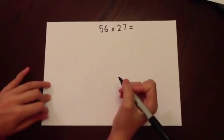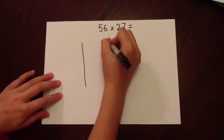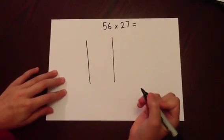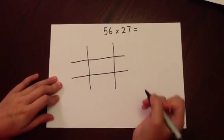This time with our grid we need two columns to come down and two rows, as we're going to partition both numbers into tens and units. Again, writing in the top left-hand column the multiplication sign to remind us this is multiplication.